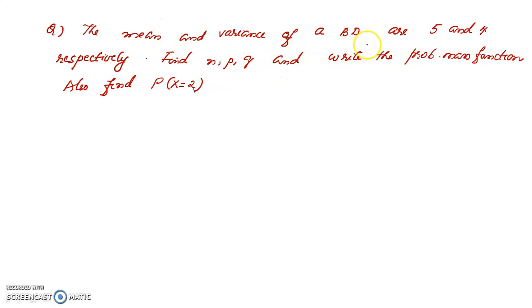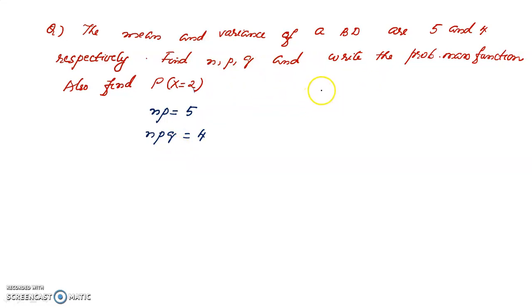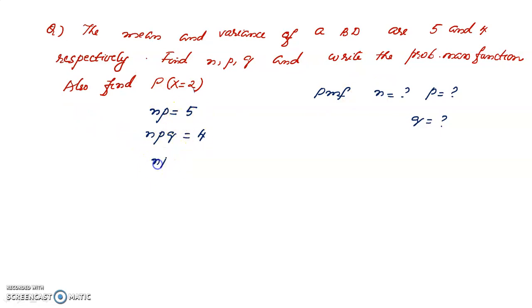The mean and variance of a binomial distribution are 5 and 4 respectively. Mean is np, so np = 5. Variance is npq, so npq = 4. Dividing npq by np gives q = 4/5.